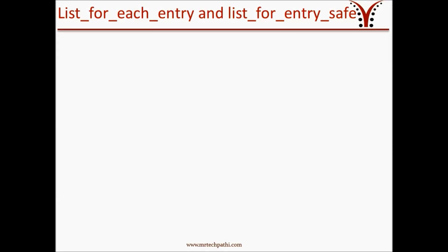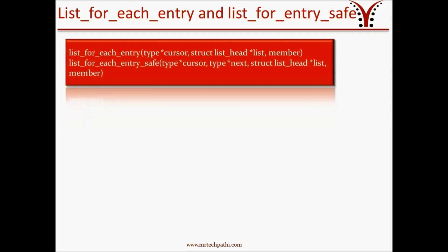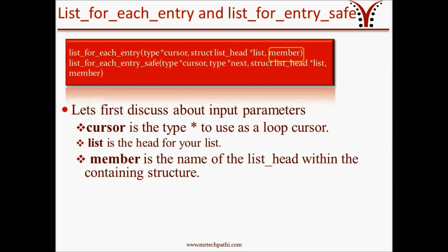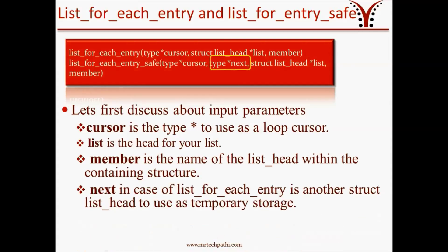The other two variants of list_for_each macros include list_for_each_entry and list_for_each_entry_safe. Let's discuss the parameters of these macros. Cursor is the pointer type to use as a loop cursor. List is the head of your list. Member is the name of the list head within the containing structure. Next, in case of list_for_each_entry_safe, is another structure list_head to use as a temporary storage unit.